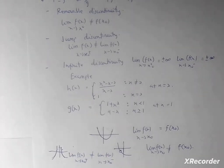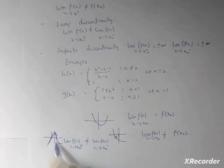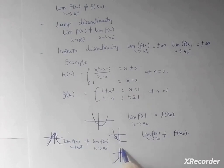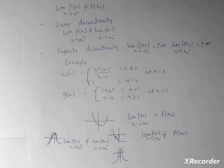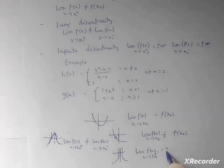Now let's go to infinite discontinuity. Infinite discontinuity is a discontinuity in which you are going to get infinity — the graph doesn't end. So when you take the limit as x approaches any x₀, you are going to get infinity. The limit of f(x) as x approaches x₀, whether from the positive or negative side, will give us positive or negative infinity. That is called infinite discontinuity.